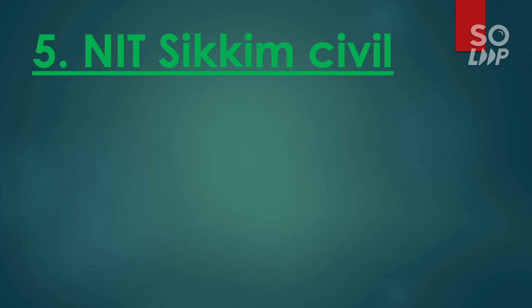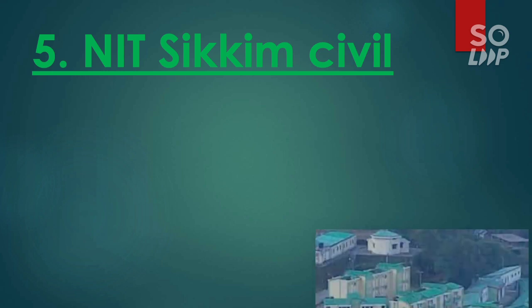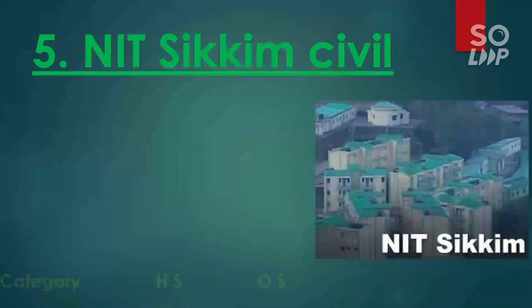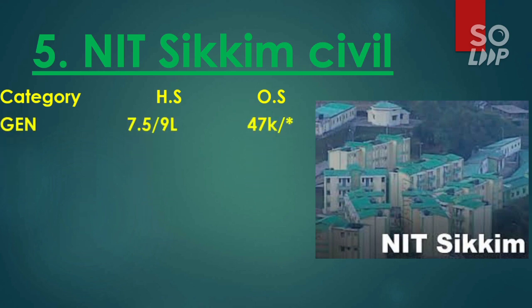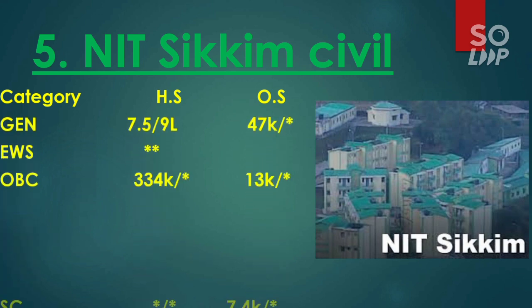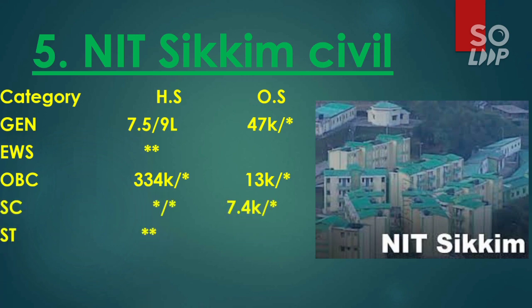The fifth NIT is NIT Calicut (NIT C), where Civil Engineering has the lowest cutoff among all branches. For General, it is 47,000. For EWS, there is no seat. For OBC, it is 13,000. For SC, it is 7,400. For ST, there is no seat.